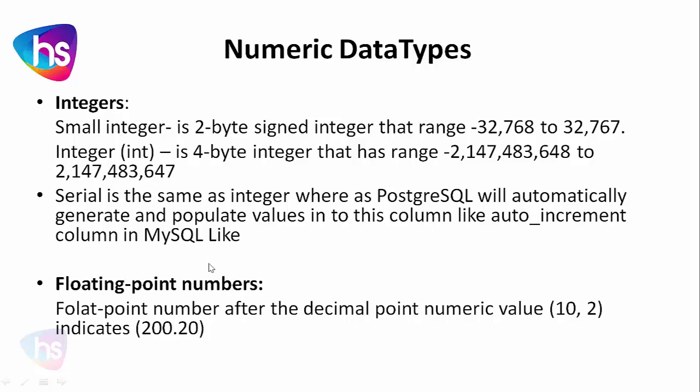The floating point number holds decimal point values — for example, defined as (10, 2) or (10, 3). If you specify up to three decimal places, it will show values after the decimal point accordingly. That is how the floating point value is handled.